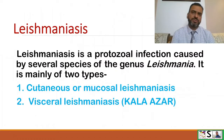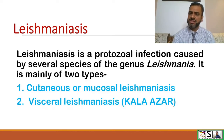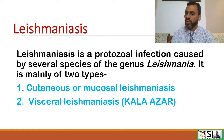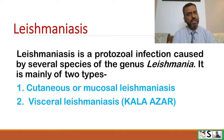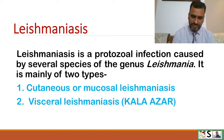What is Leishmaniasis? Leishmaniasis is a protozoal infection caused by several species of the genus Leishmania. It is mainly of two types: cutaneous or mucosal Leishmaniasis, and the second one is visceral Leishmaniasis, which is actually known as Kala Azar.